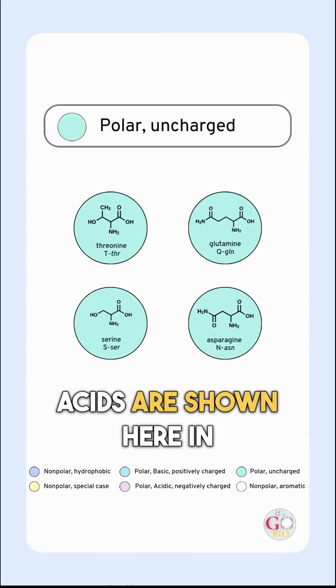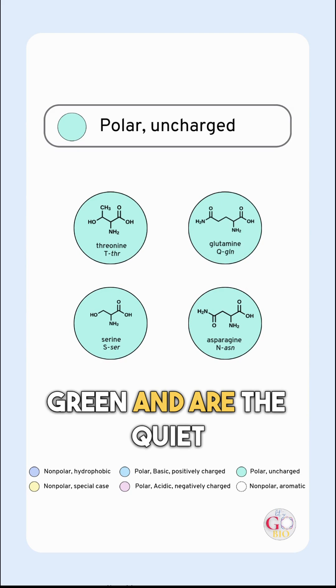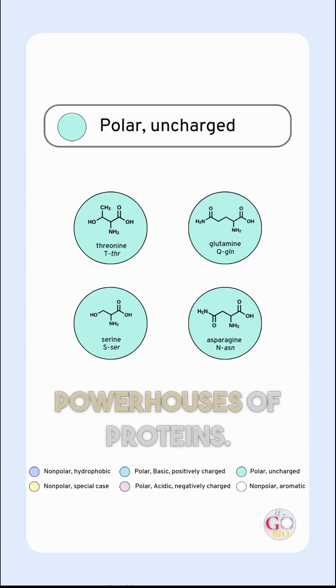Polar uncharged amino acids are shown here in green and are the quiet powerhouses of proteins. They are serine, threonine, asparagine, and glutamine.